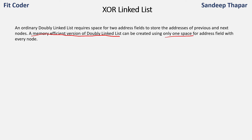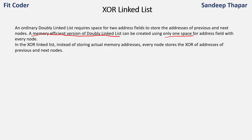Instead of having two address spaces we are having only one address space, and based on some manipulations we can traverse in the forward direction as well as in the backward direction. In one address space we are storing the address of both previous and next. To do that we make use of the XOR operation — each node stores the XOR of addresses of the previous and next nodes.